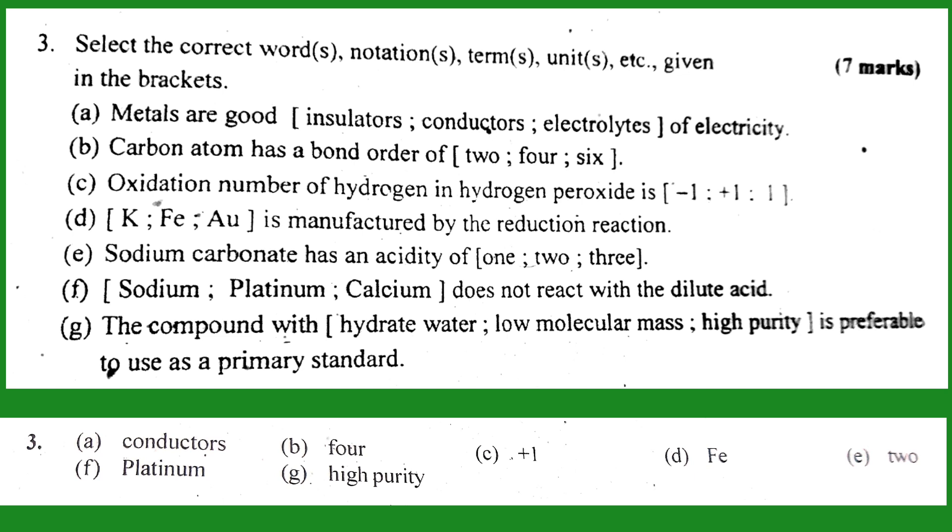Number F: platinum does not react with dilute acid. Platinum is the correct answer - platinum does not react with dilute acid. Number G: the compound with high purity is preferable to use as a primary standard. The answer is high purity. The primary standard solution should have high purity, not low molecular mass.